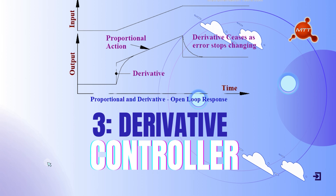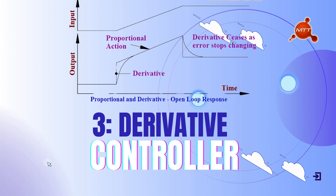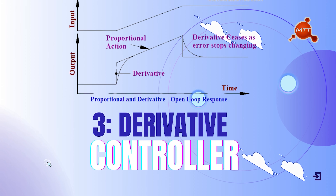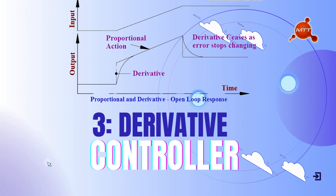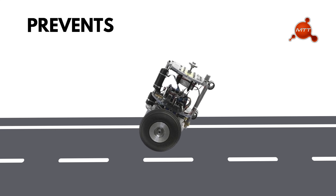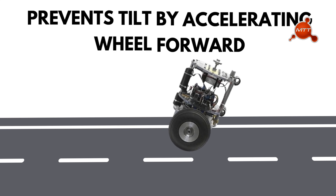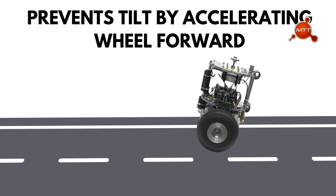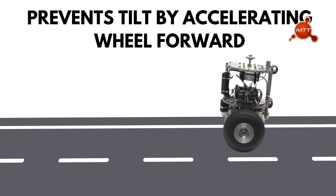Lastly, the derivative control component predicts future errors by monitoring how fast the error is changing. It applies corrections based on the rate of change of error, helping the system respond quickly to sudden changes and preventing overshoot. If the self-balancing robot starts leaning forward quickly, the D controller reacts immediately by accelerating the wheels forward, preventing the tilt from increasing further.